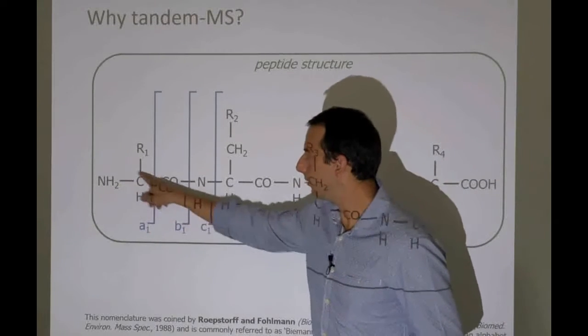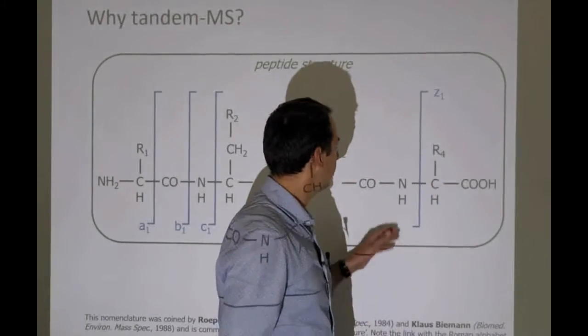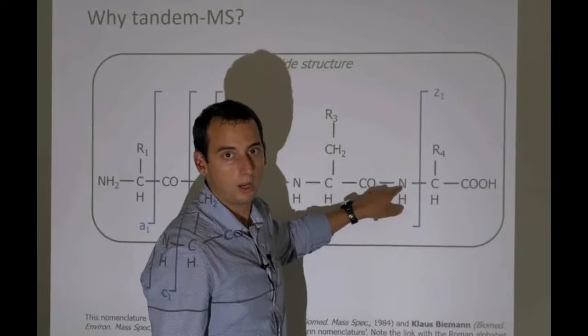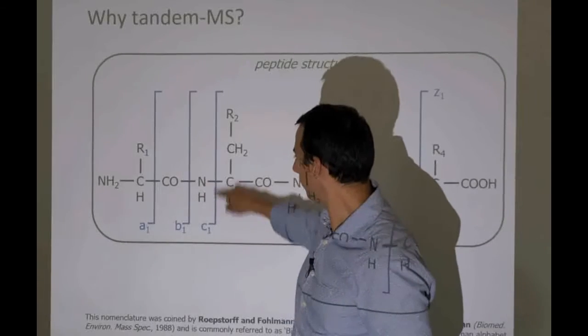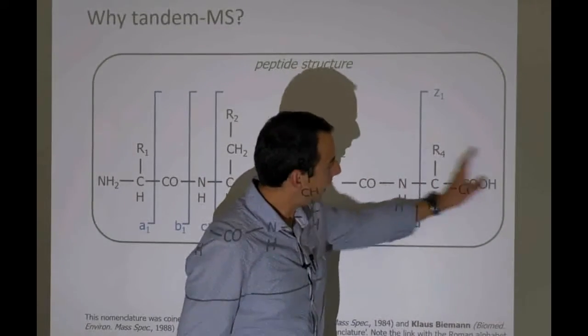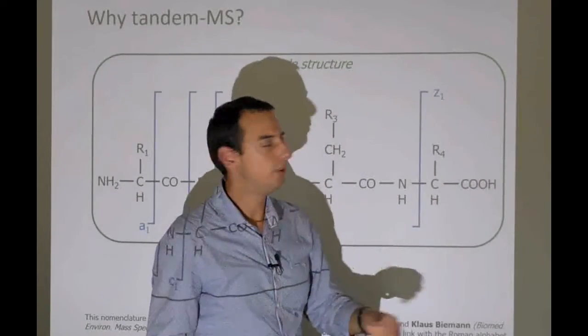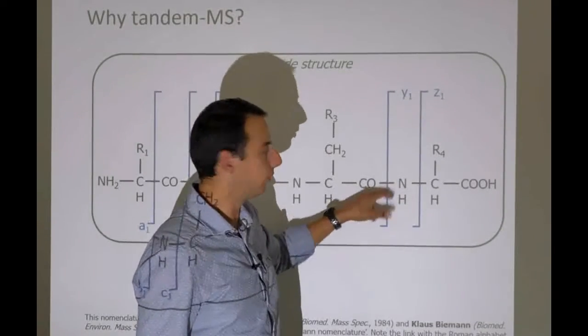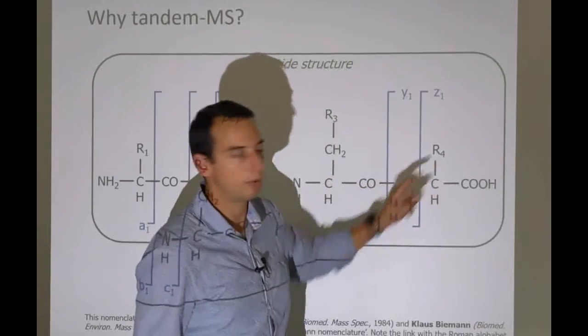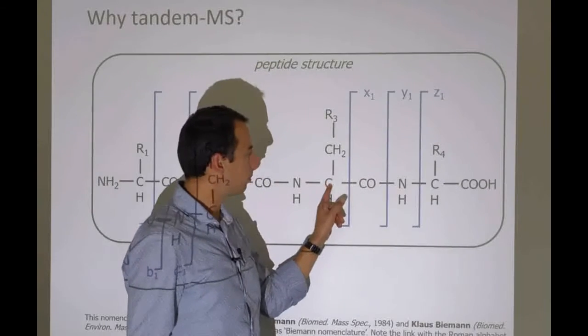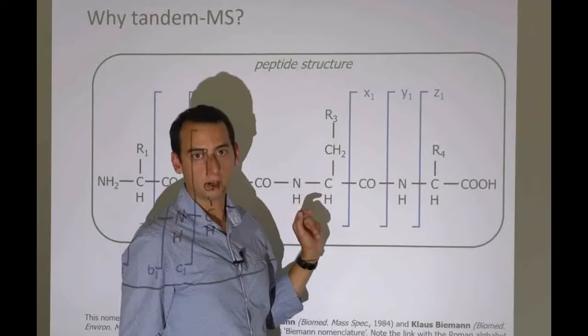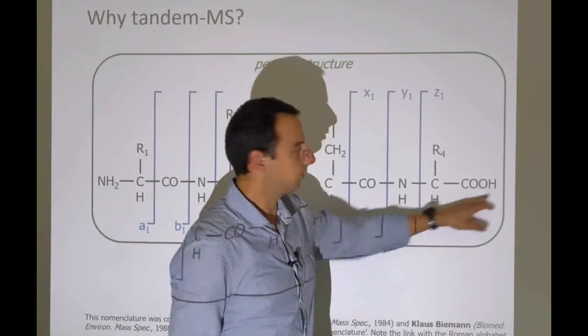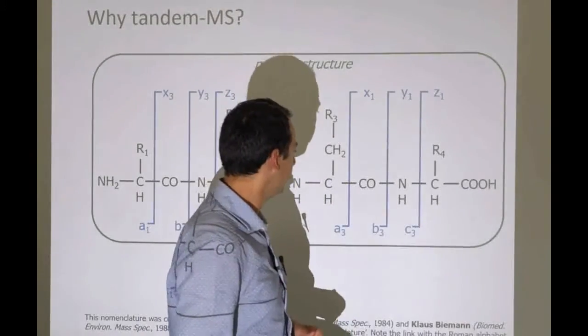We can do exactly the same kind of fragmentation but then counting from the C-terminus onwards. We can break between the central carbon of the fourth residue and its own amine group. This ion that now contains the carboxyl group of the original peptide, so it is the tail of the original peptide, is called a Z-ion. The next one down is called Y-ion, and that's the result of the breakage of the peptide bond. And then finally we can also break between the carboxyl group of the third residue and its central carbon atom, and that is called X. It's very simple. You've got ABC for the ones that contain the N-terminus, XYZ for the ones that contain the carboxyl group.